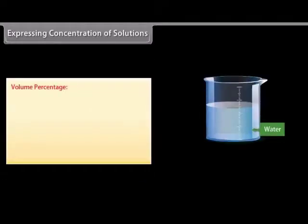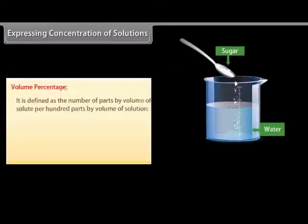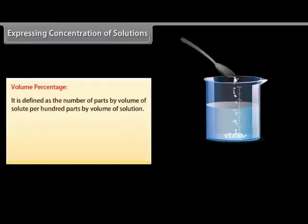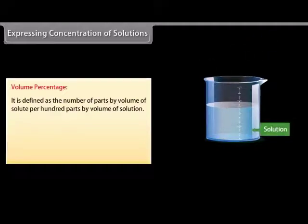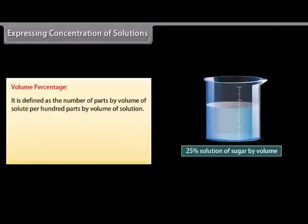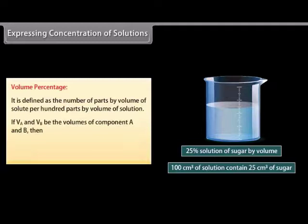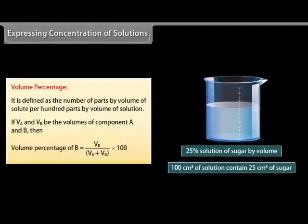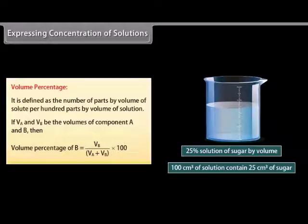Volume percentage is defined as the number of parts by volume of solute per hundred parts by volume of solution. If V_A and V_B be the volumes of component A and B, then volume percentage of B is equal to V_B divided by (V_A plus V_B), multiplied by 100.